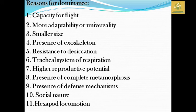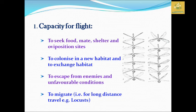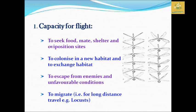First, in the world of capacity for flight — insects use flight to seek food, shelter, and mating sites. They have a higher flight radius and can colonize new habitats as well as exchange habitats, forming new colonies in new places. They can escape from enemies and even from unfavorable conditions. For example, locusts travel more than 10,000 km per year.